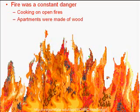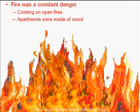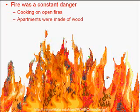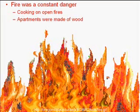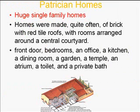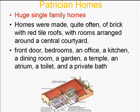Now let's look at the patrician home — if you're rich, how would you be living? They lived in huge single-family homes. Inside you might find several bedrooms, an office, a kitchen, and dining rooms — perhaps one for summer and one for winter depending on the orientation. They would have a garden area inside, and might even have a temple, a private bath, or even an indoor swimming pool, depending on how wealthy they were.